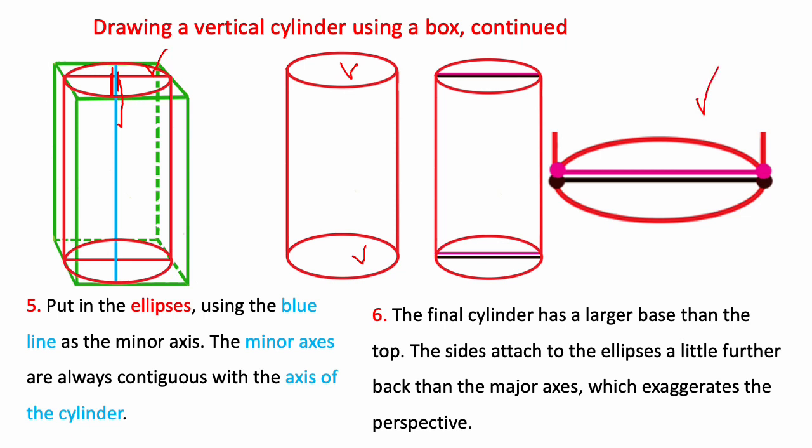In this close-up over here you see that the sides attach to these pink dots which are behind the major axis of the ellipse as shown by the black line. And this difference is most noticeable at the base because the ellipse is a little wider there.